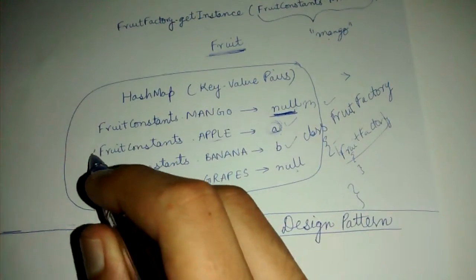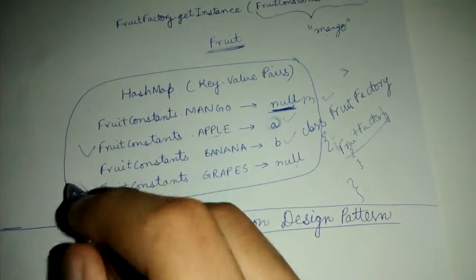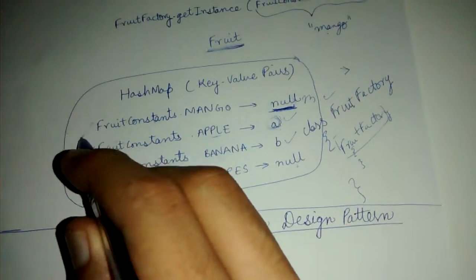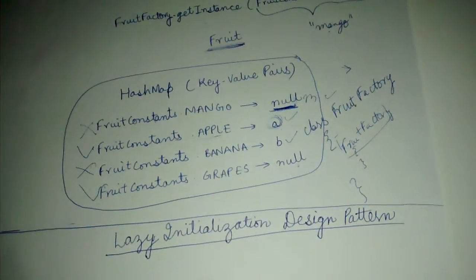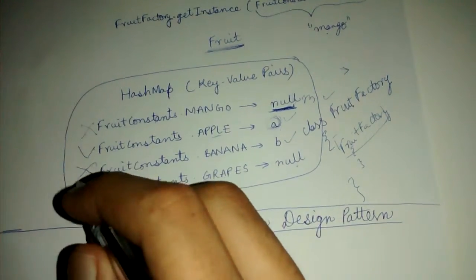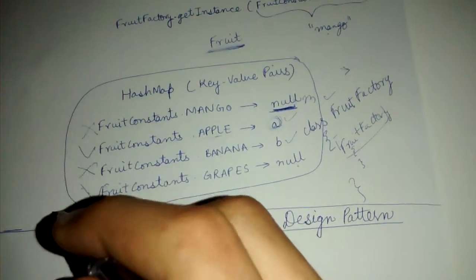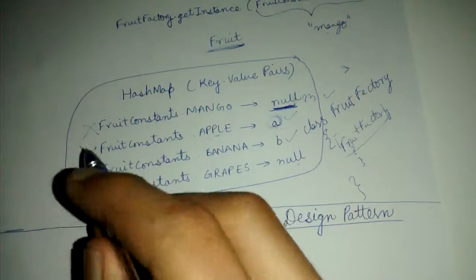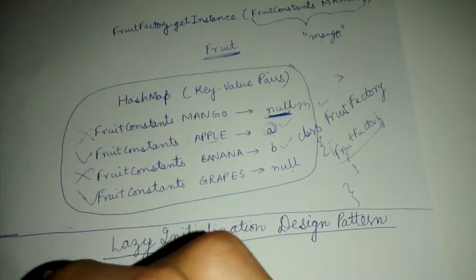Let's say our program just requires apple and grapes, then we won't create banana and mango. This will save some resources of our computer and is a good performance benefit.